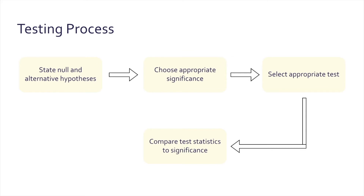Once we compare the test statistic to significance, we are able to make a decision about our hypothesis. With the null and alternative hypothesis, we're either going to reject the null or fail to reject the null.